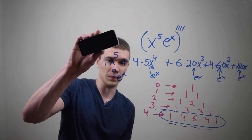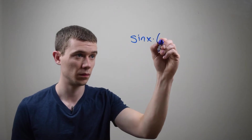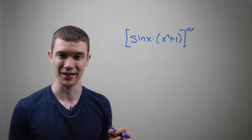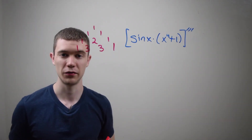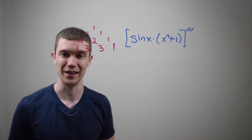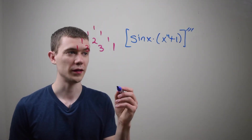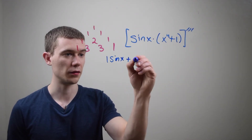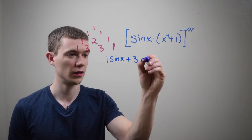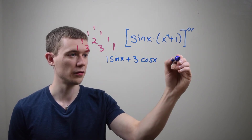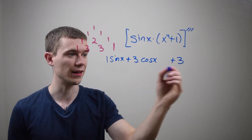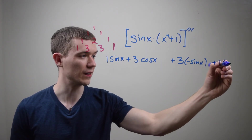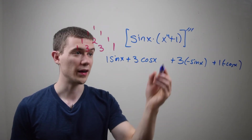So let me show you one more example of this. Let's take the third derivative of this product using this rule. So again, we need to remember Pascal's Triangle, and I only need to go this far because it's a third derivative — I only need this line. So let's follow the rule. It's one times the first function, which is sine x, plus three times the derivative of the first function — the derivative of sine is cosine — then it'll be plus another three times the derivative. The derivative of cosine is negative sine. And then plus one, the derivative of negative sine is negative cosine.